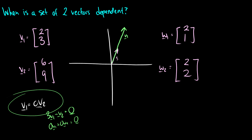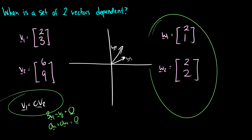Whenever one vector is a multiple of the other and there are two vectors, the set is dependent. This extends to larger sets: if among 100 vectors, v1 and v76 are multiples of each other, the set is dependent. Conversely, w1 = (2, 1) and w2 = (2, 2) are clearly not multiples of each other, so together they are linearly independent — we can combine them to reach any point in the space.